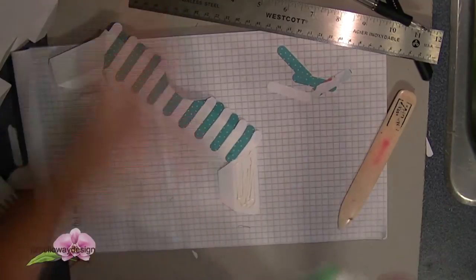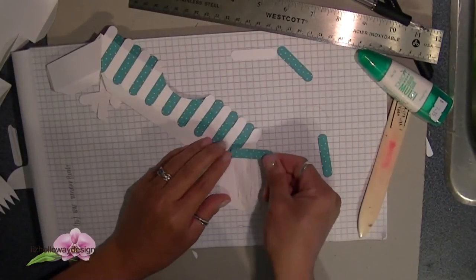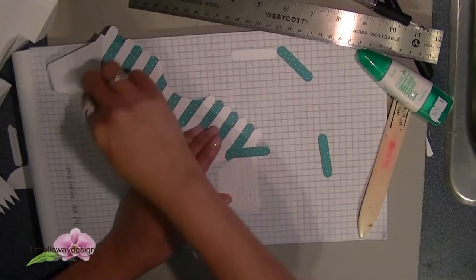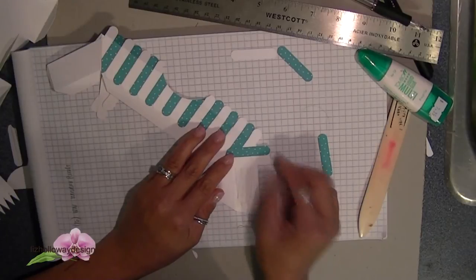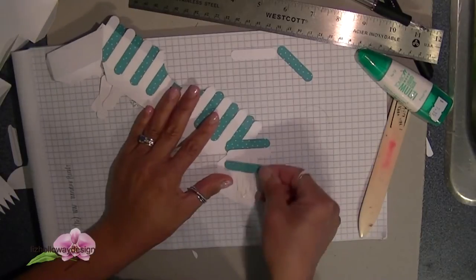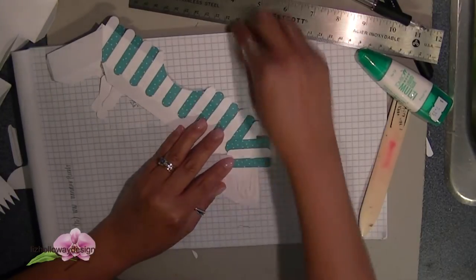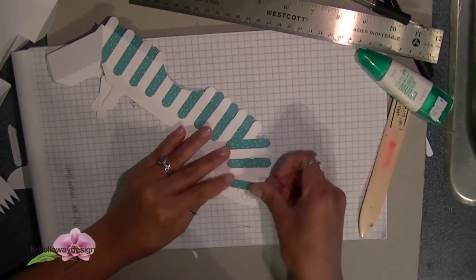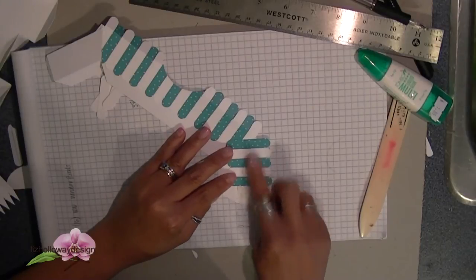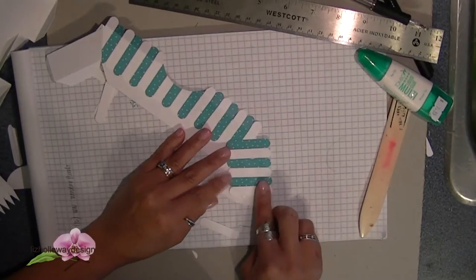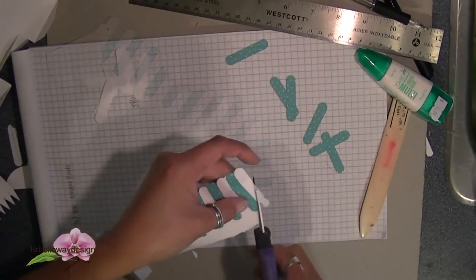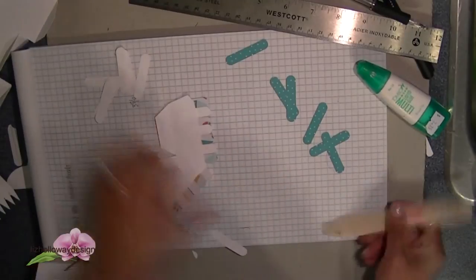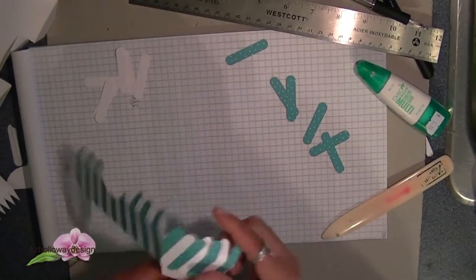When you get your sides attached then go ahead and align the straight edge to the grid paper and then starting at the connecting point continue on the window punch pieces and again alternating the whisper white and the Bermuda bay pieces. To trim the excess up go ahead and bend your side panel and then follow the line and trim.